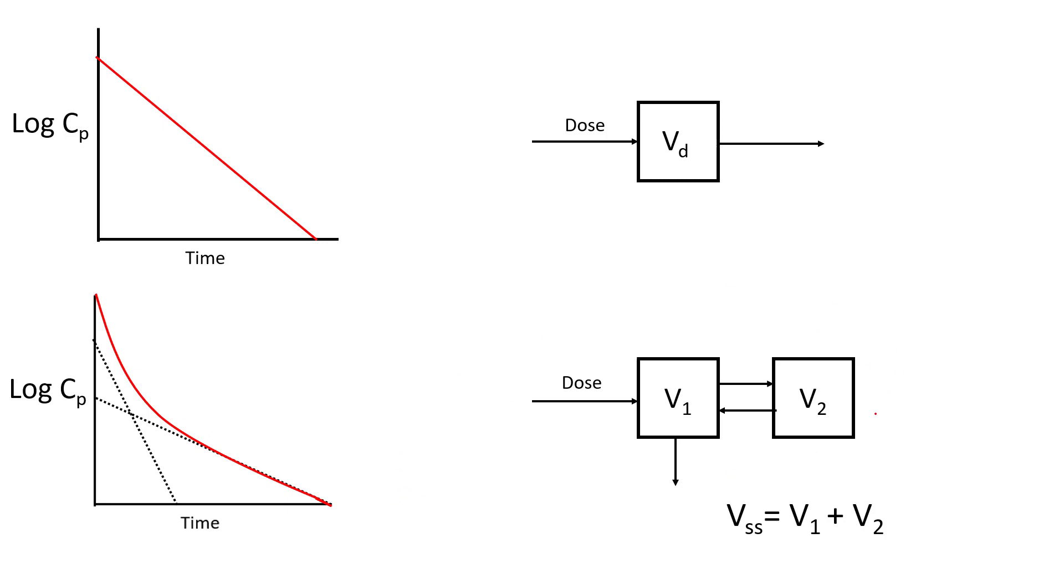And when we model, we have these two volumes that correspond to those two concentrations at time zero. Another term you might find is volume of steady state. And volume of steady state is just the sum of the volumes in a multi-compartment model.